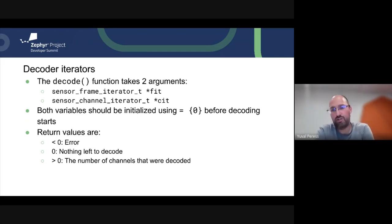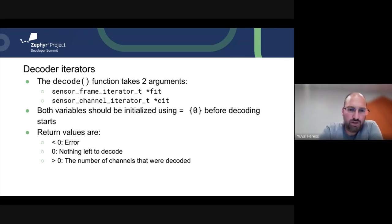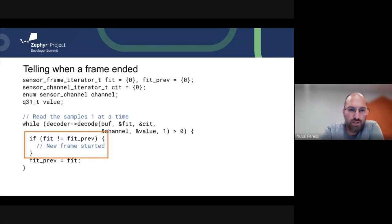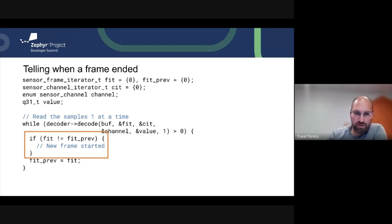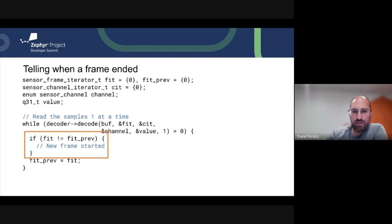It's highly recommended to use curly-brace zero initialization for the iterators, because while right now they map to an int, there's no guarantee that will stay the case — this is an experimental API and if we change it to a struct, curly-brace zero will be forward compatible. The return values for the decoder are straightforward: negative values for errors, zero if done decoding the entire buffer, and greater than zero indicates the number of channels decoded. You can detect when a frame ends by comparing the frame iterator to its previous value — if it changed, a new frame started.